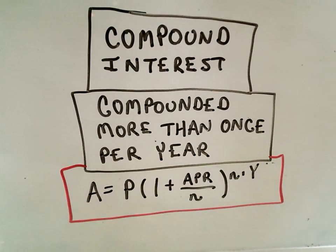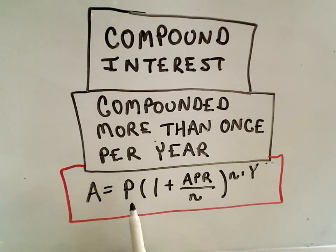Okay, in this video I want to talk about compound interest where it's compounded more than once a year. Basically the formula says the amount you have accumulated if you start with a principal—this is what you go to the bank with, for example, that's your principal or starting amount.